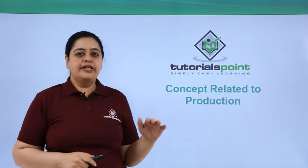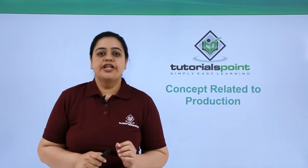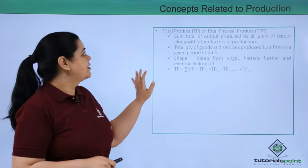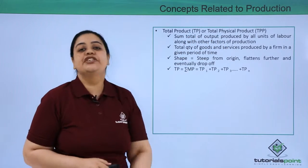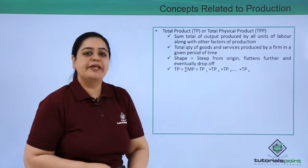Now before we move ahead, we need to understand certain concepts which are related to production. Now what are those? The first concept is your total product. This is also known as total physical product. So the short form here is TP or TPP.